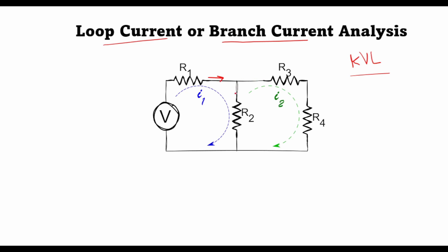These are the branches here: 1, 2, and 3. A current I1 flows in branch 1, and a current I2 flows in branch 2. The current flowing downwards would be I1 minus I2, which is the current through branch number 3. As you can see, for this particular example it doesn't matter whether we apply loop currents or branch currents — the solution of the network remains exactly the same. You can click the link to watch my previous video where we solved this network using loop current analysis and the method of substitution.